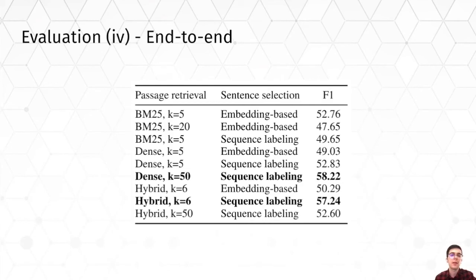Finally, we carried out an end-to-end evaluation of our fact-checking system on FACTCHECK-NLI+, using various configurations of top-K passage retrieval and evidence selection approaches. This table shows the macro-average F1 score for the three classes — supporting, refuting, and neutral — for some of the test configurations. We see that dense or hybrid retrieval with evidence selection using the proposed sequence labeling model gives the best results. Even though hybrid retrieval leads to slightly worse performance, it requires much fewer passages and makes the system more efficient.